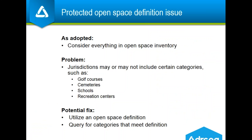Continuing on the topic of open space, here's an example of unclear definitions. The supplement asks us to consider everything in our open space inventory. The problem is that our regional inventory is actually an assemblage of local data — every jurisdiction has their own criteria to include in their open space layer, and we're not in a position to tell you what to include or not, as your data needs to meet your local needs first. Some jurisdictions include golf courses and cemeteries, some include schools and recreation centers, some have included polygons representing future open spaces that don't exist today.